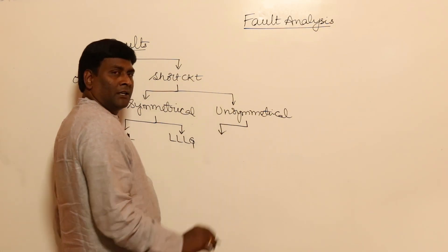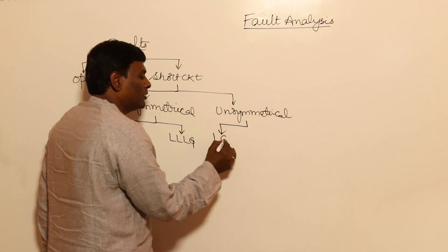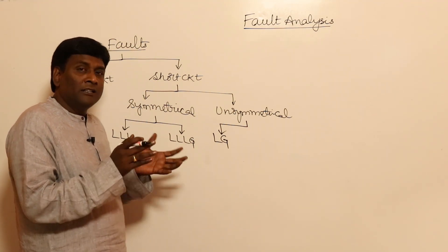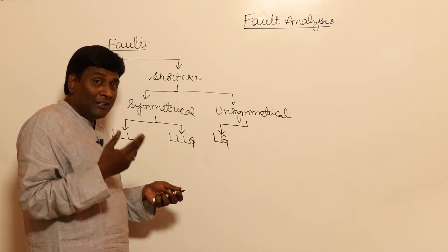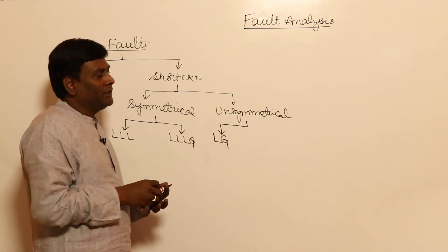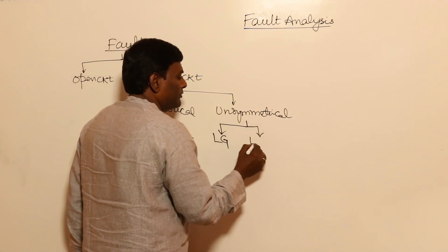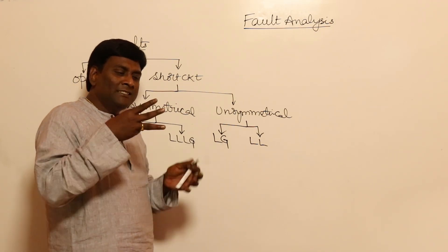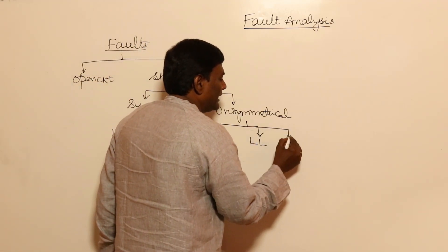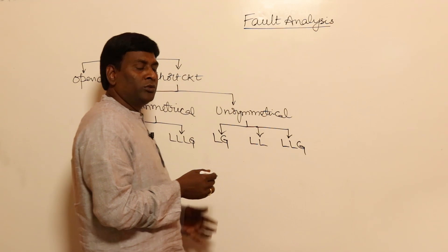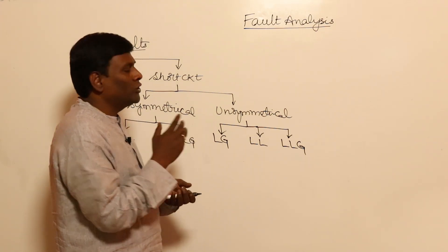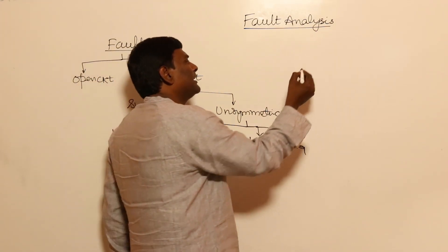In unsymmetrical faults, for example, if one line is grounded (L-G fault), the remaining two lines are healthy, so we cannot use a single-phase equivalent circuit. Another type is the L-L fault where two of the three lines are connected together while the third is intact. There is also the L-L-G fault where two lines are connected with the ground. These are the classifications of unsymmetrical faults.